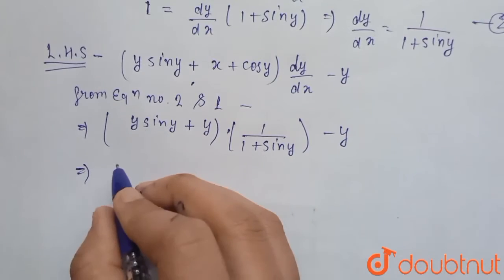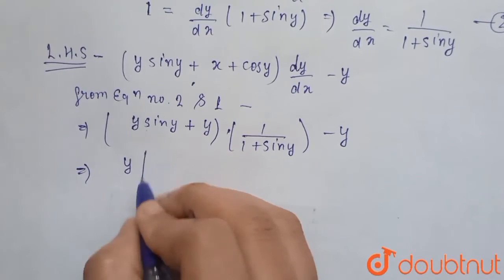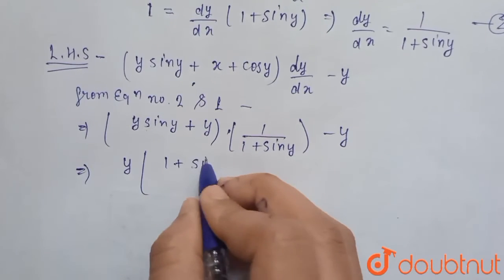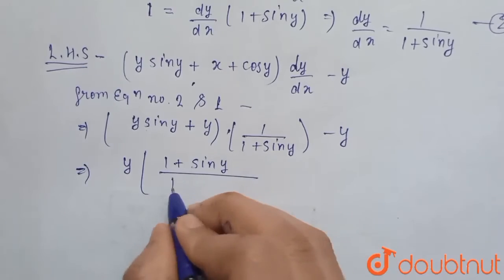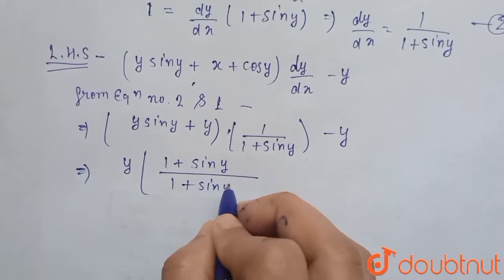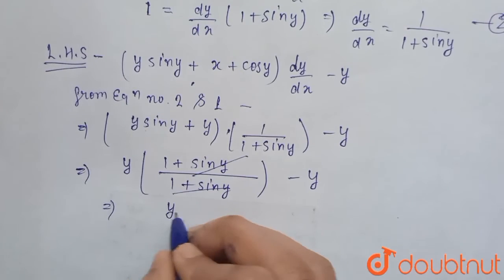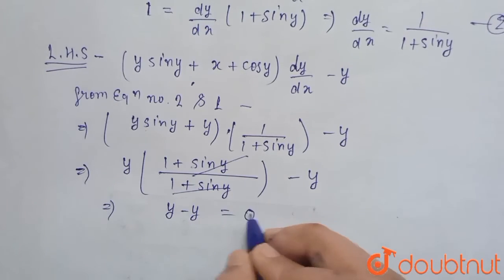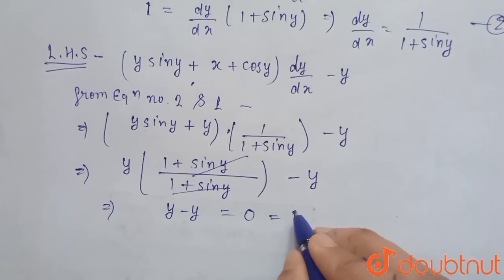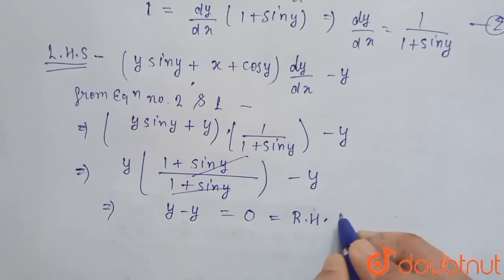Now, take y common from here. So y times 1 plus sin y upon 1 plus sin y minus y. Cancel this. We get y minus y, this is equal to 0, and this is equal to our right hand side.